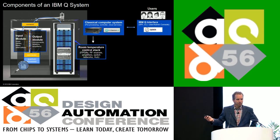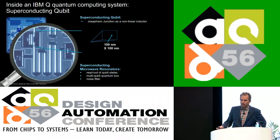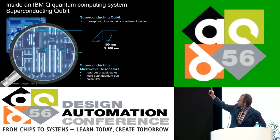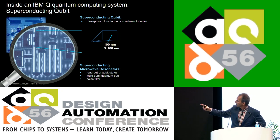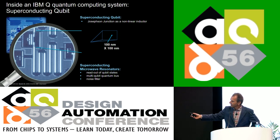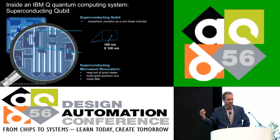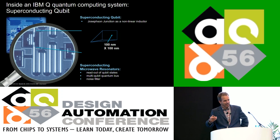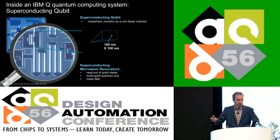There are different implementations of quantum chips. IBM's is based on superconducting qubits using Josephson junctions as nonlinear inductors, connected with small microwave resonators. These resonators serve two functions: reading out the qubits after operations, and connecting two qubits to each other to create the entanglement that allows qubits to communicate and stay entangled throughout their operations.